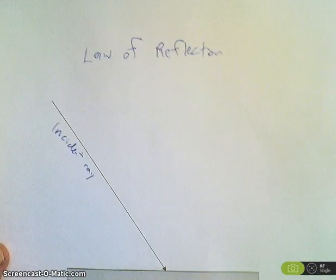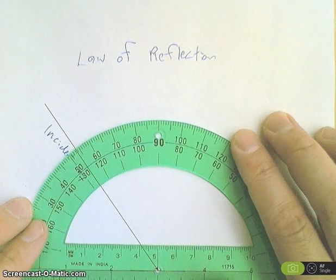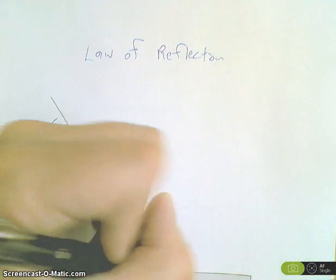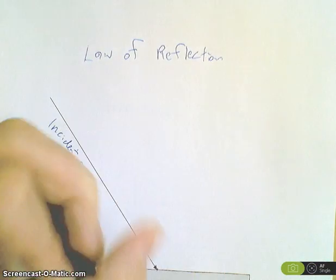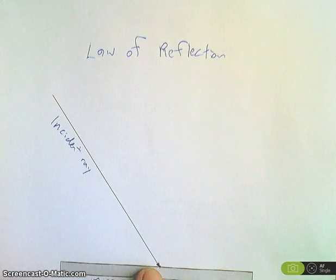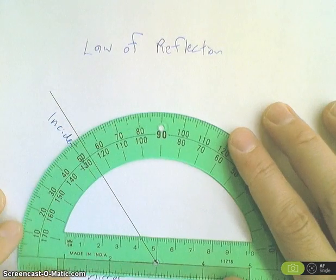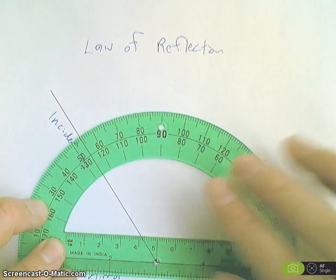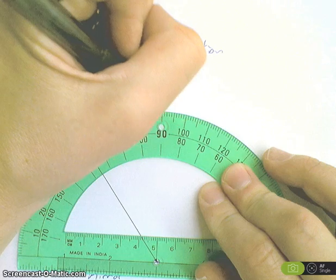So, you're going to draw a normal line at the point where the light ray strikes the mirror. The normal line is a line, an imaginary line, that is 90 degrees.